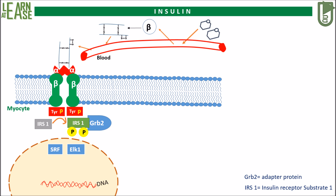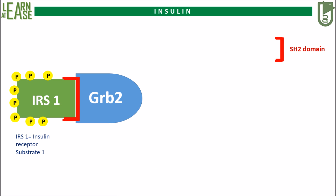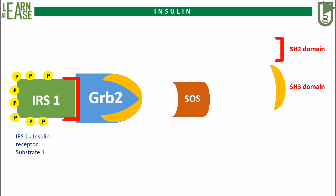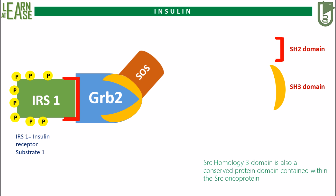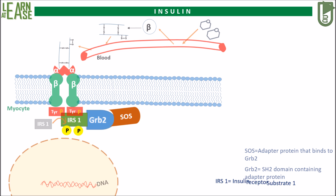There exists an adapter protein named SOS, which will then bind to GRB2. IRS1 bounded to GRB2 and SOS is shown here. GRB2 possesses two additional SH3 domains, which is a conserved protein domain contained within the Src oncoprotein. SOS adapter protein will bind to the SH3 domain of GRB2. SOS is also known as RAS-guanine exchange factor, and it is an abbreviation for Son of Sevenless. Let's go back to the original animation.